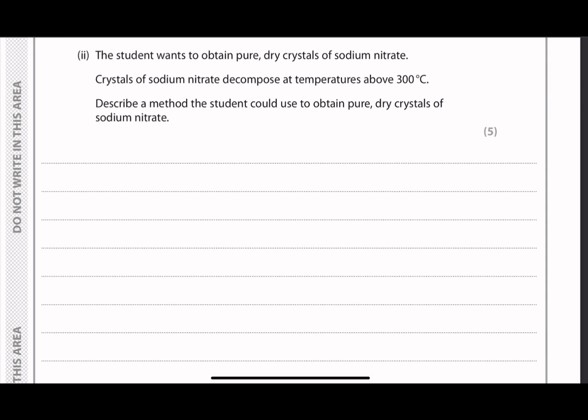The student wants to obtain pure dry crystals of sodium nitrate. And the crystals decompose at temperatures above 300 degrees Celsius. Describe a method the student could use to obtain pure dry crystals of sodium nitrate. So we immediately think about the description of the crystallization method, which is in chapter 1. So the first step from the sodium nitrate solution is we first need to filter out some of the impurities from the solution just to make sure that it is pure. Because in the question, they emphasize it's pure and dry crystals.